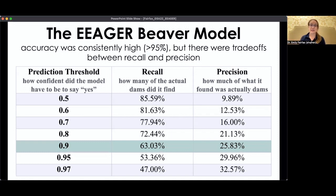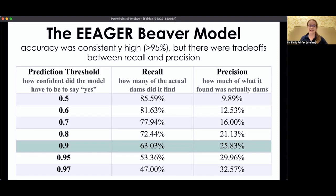Instead, we looked at recall — how many of the actual beaver dams the model was able to find — and precision: how much of what it thought was beaver dams was actually beaver dams. We favored recall over precision. We wanted it to find the majority of beaver dams without just flagging everything as a beaver dam, because it was very quick for us to go through afterwards and quality-control the data. We have a prediction threshold — the model's confidence in its predictions — and you can adjust that to favor recall or precision a little more or a little less.